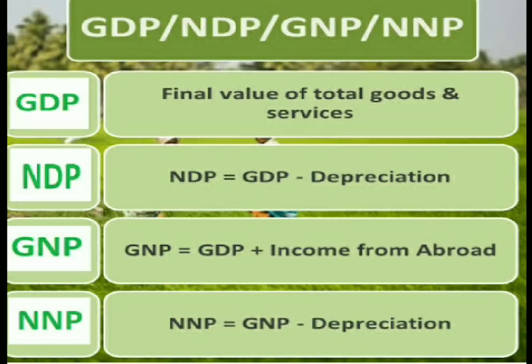So to summarize: GDP — Gross Domestic Product; GNP — Gross National Product; NNP — Net National Product. These are the key national income measures.